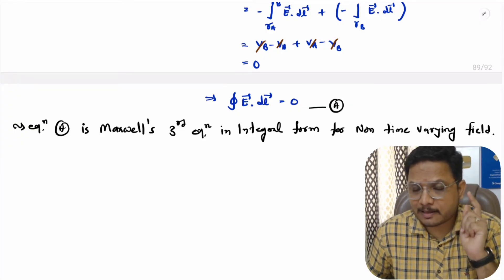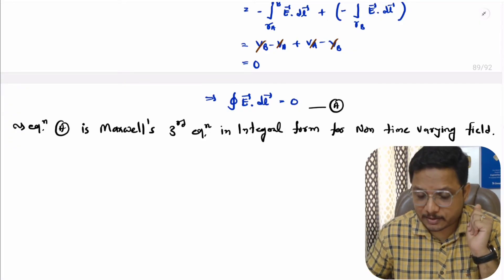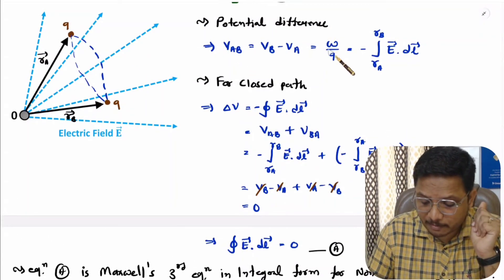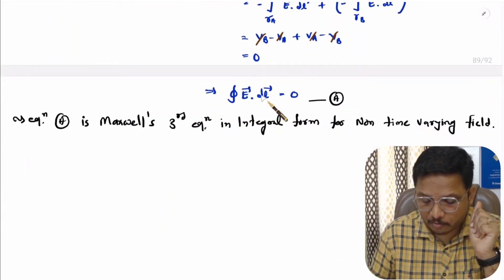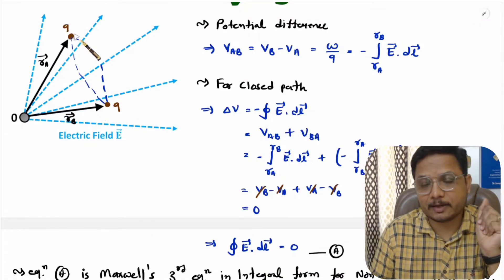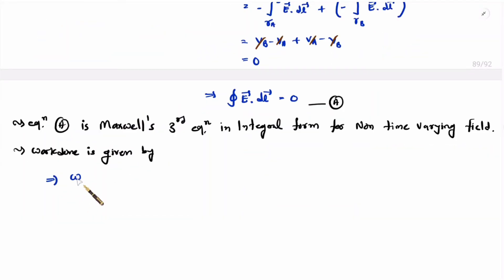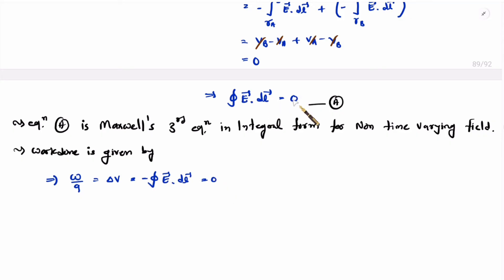There are a few essential concepts you need to understand. Potential difference is work done per unit charge. Based on this equation, you can say work done for a closed path is 0. So for a closed path with a non-time-varying field, work done is 0. Work done per unit charge is potential difference. For a closed path, the line integration of electric field is 0, as we have derived. Based on that, for a closed path with a non-time-varying field, work done is 0.